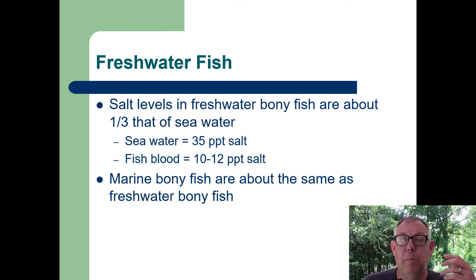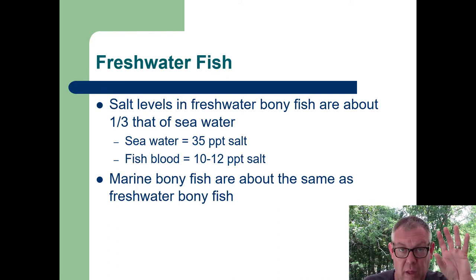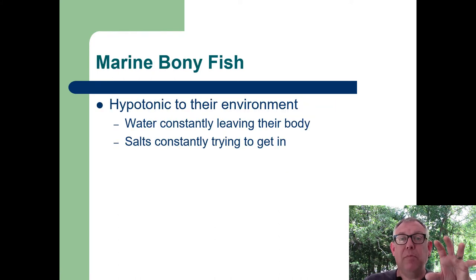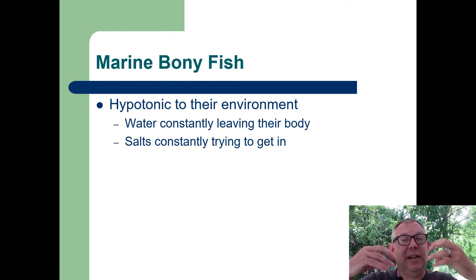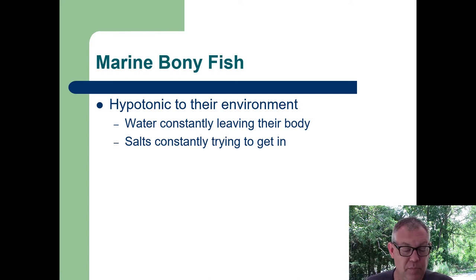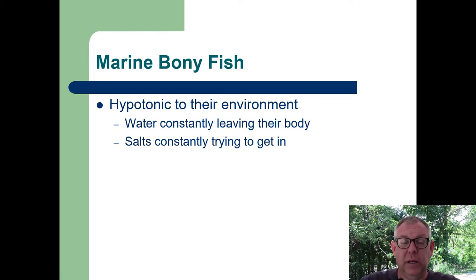A marine bony fish that lives in the ocean also has about the same osmolarity as a freshwater bony fish — about one-third as salty as the ocean. So both freshwater and marine bony fish have about the same internal salinity, but they live in different external environments. The freshwater fish is hypertonic to its environment. The marine bony fish, living in very salty water, is hypotonic to its environment — meaning water is constantly leaving the marine bony fish and salts are constantly trying to get in. Just the opposite problem of the freshwater fish.